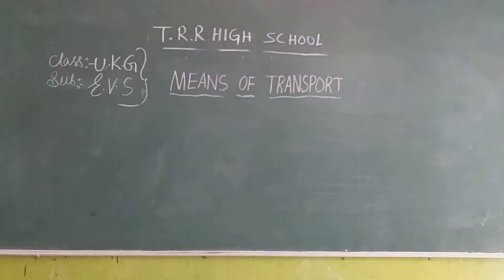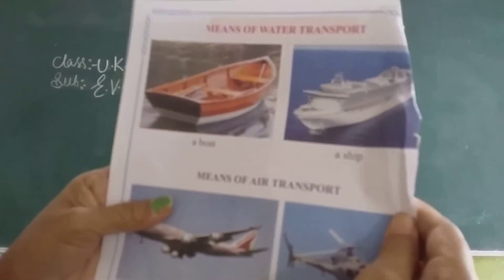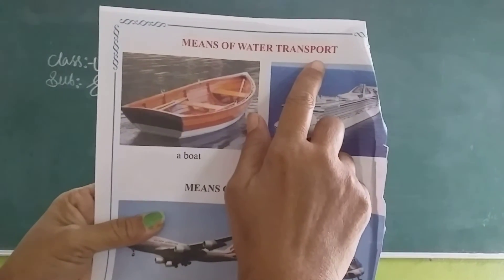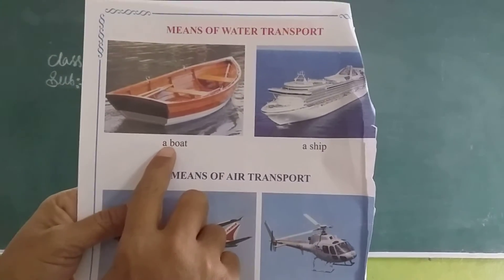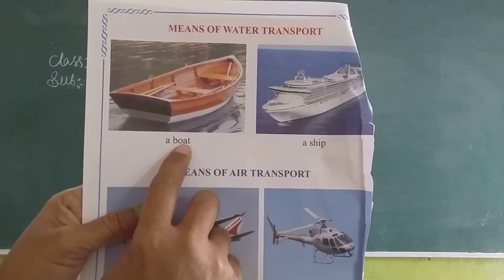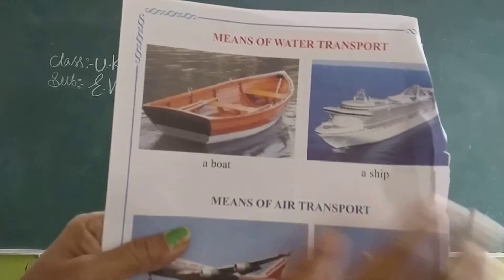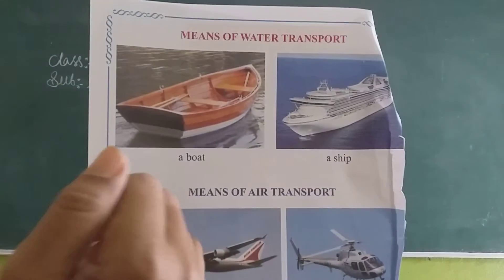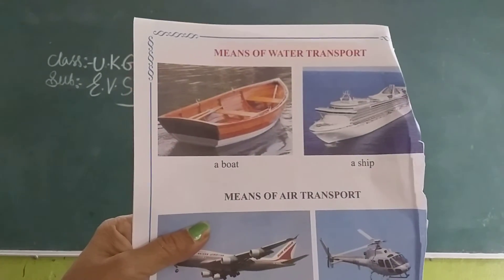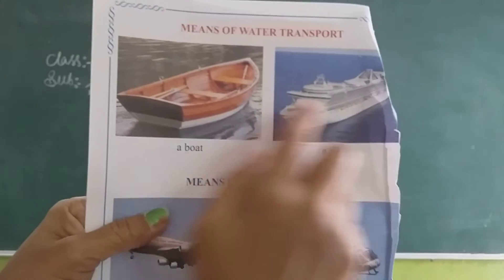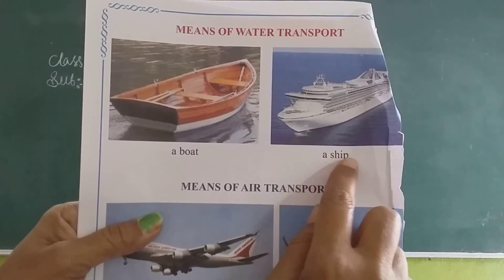Now look at here — turn the next page. Look at here: means of water transport. These are the means of water transport. B-O-A-T. Boat. Where do we see the boats? We see the boats when we travel on water. These boats travel on water. Boat. B-O-A-T. Boat. S-H-I-P. Ship.